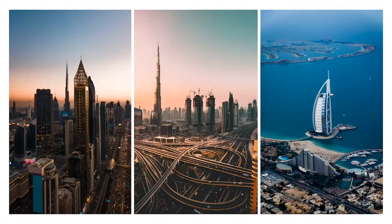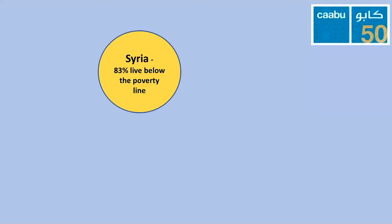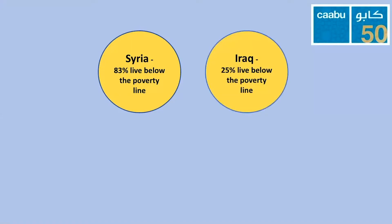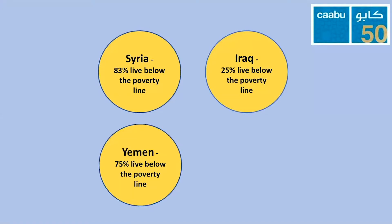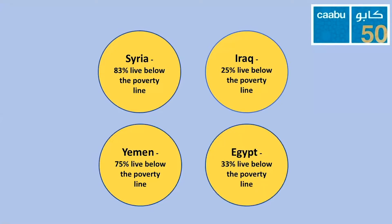Dubai, along with other countries in the Gulf, are among some of the richest countries not just in the Arab world, but across the entire world. However, their wealth does not represent the wealth of the Arab world. The Arab world also has very high levels of poverty, where in some countries vast numbers of the population are living below the poverty line. For example, in Syria 83% of the population are living below the poverty line, in Iraq it's 25%, in Yemen it's 75%, and in Egypt 33%.